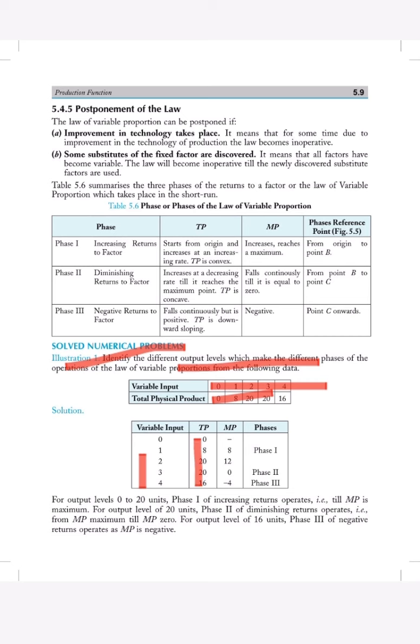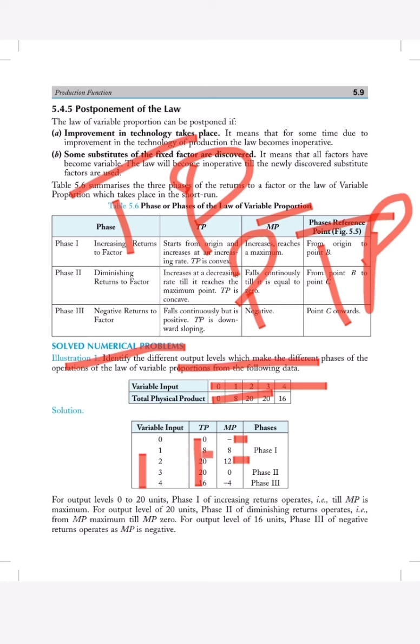Inputs will be here. Total product will be here. Now marginal. First of all, marginal will be 0. Then formula of marginal product will be total product minus previous total product. So 8 minus 0 will be 8. Then 20 minus 8 will be 12. Then 20 minus 20 will be 0. 16 minus 20 will be minus 4.